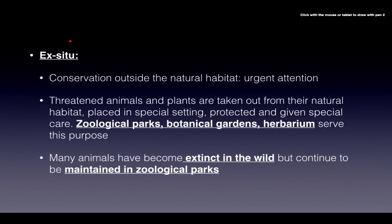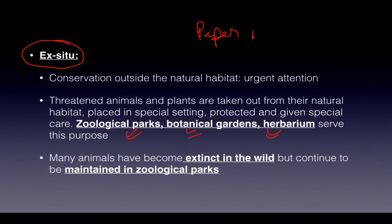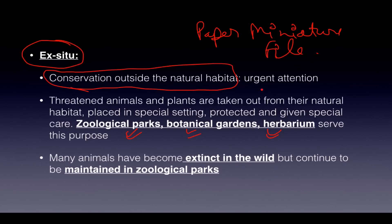What we have studied so far is in-situ conservation — conservation on site. Ex-situ conservation is done in zoological parks, botanical gardens, and herbariums. Herbarium involves converting a plant into paper form with its flower or in miniature form, stored in a file-like format. There is conservation outside the natural habitat for threatened animals and plants: they are taken from their habitat, placed in special settings, and given special care. Some animals are extinct in the wild but are still maintained in zoological parks only.